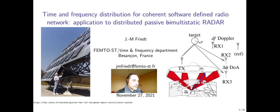Let us discuss today the use of time and frequency distribution for coherent software-defined radio networking and how this applies to distributed passive multi-static radar synchronization. We present a system where an emitter radiates electromagnetic waves towards space, and multiple software-defined radio receivers record the echoes returned by a moving target. The question we wish to answer is how can we synchronize these multiple spatially distributed receivers so that the recording is coherent and allows for phase analysis.